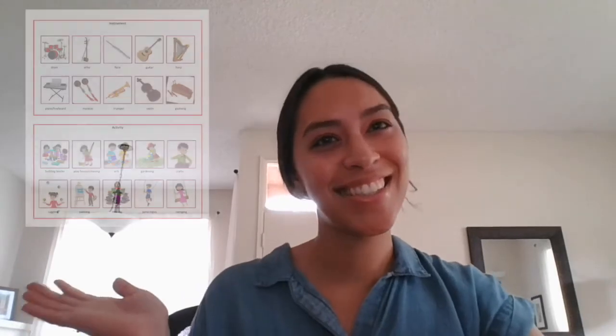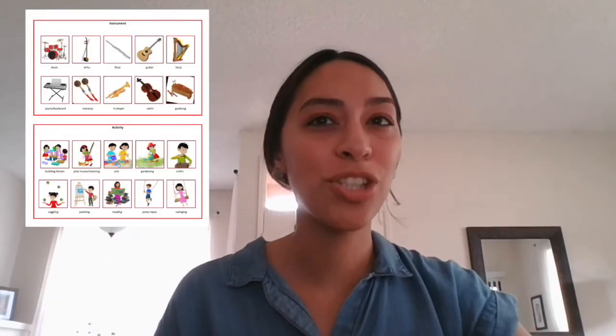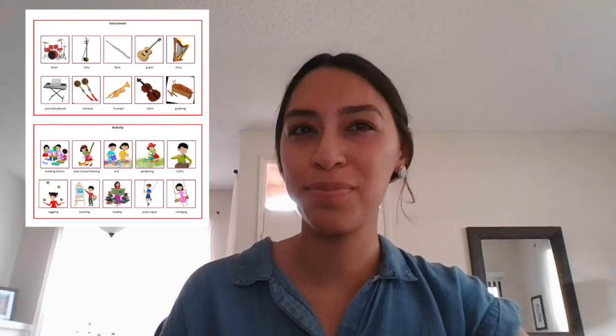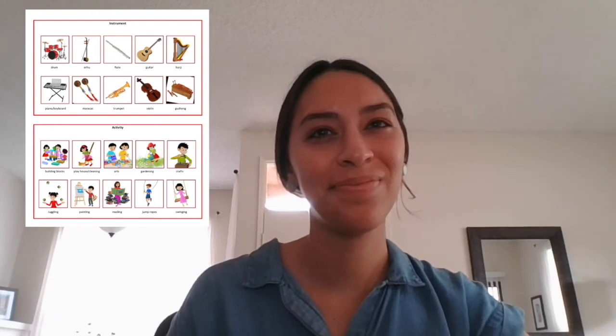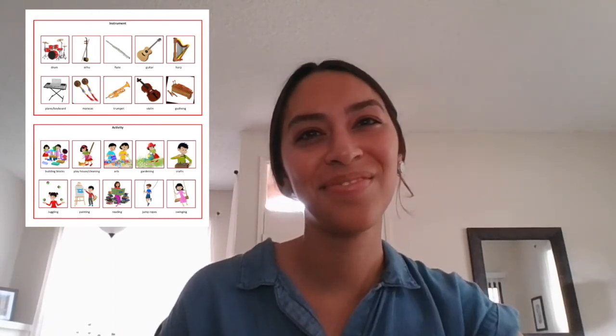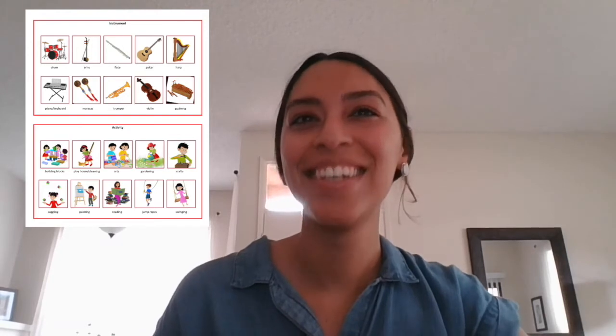Great singing everyone. In order to play Likes and Dislikes, we first need to get out that sheet that has all of those fun things on it — it looks like this. If you can't find it, make sure to check the description box below. Did you find it? Great.